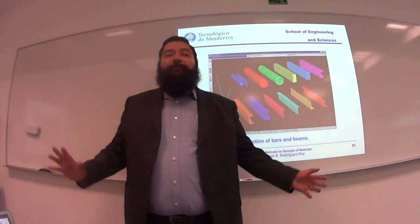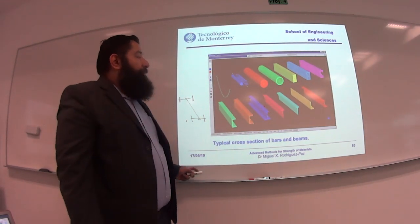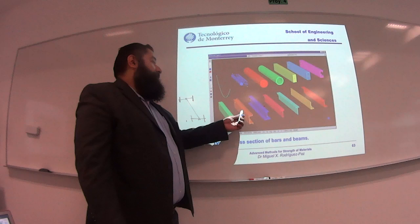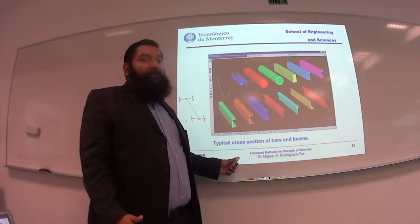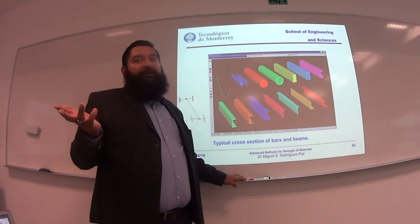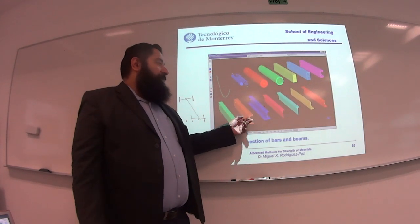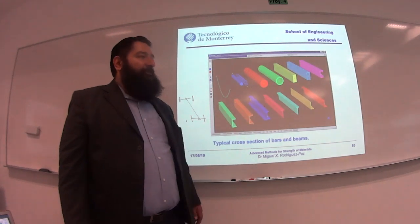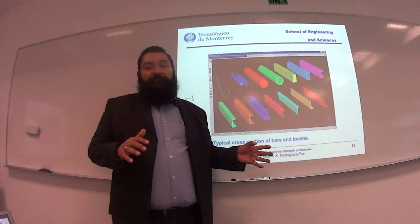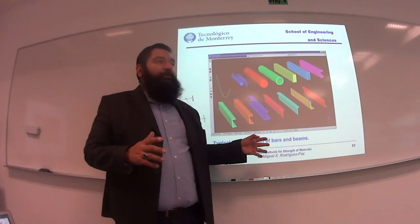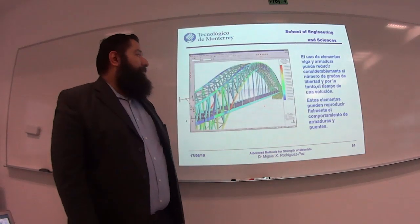Even if it's very simple software like the one I'm going to give you, you define this cross section with the inertia moments. You learn how to calculate inertia moments. You know that there are two major inertia moments for these kinds of sections for bending. With those, you are telling the program how stiff the element is.